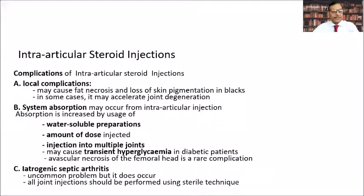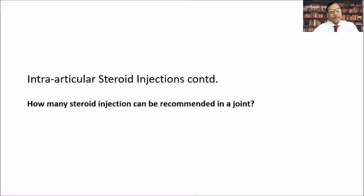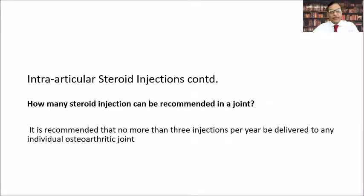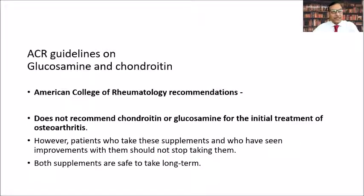There can also be iatrogenic septic arthritis, though it is rare. The recommended frequency is no more than three injections per year to a particular joint. The ACR guidelines clearly state that chondroitin and glucosamine are not recommended for initial treatment of osteoarthritis. However, patients who have already started them or have felt benefit can continue — they are safe in the long term.